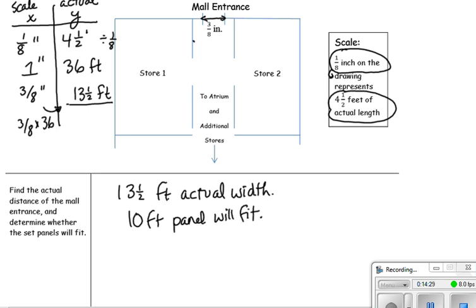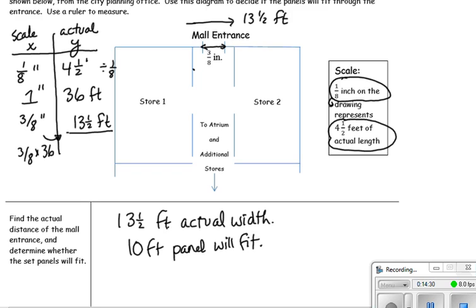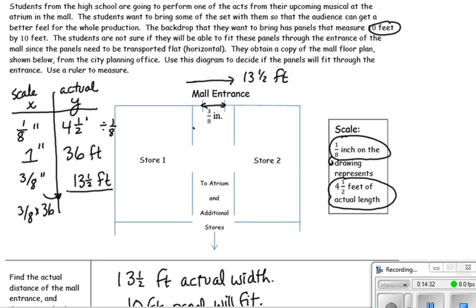To review, this lesson has been about computing the actual lengths from a scale drawing. You set up a table and calculate your scale given the information. In one case you can multiply by a whole number. In another case where they give you a fraction, you need to calculate the ratio first and then use that.